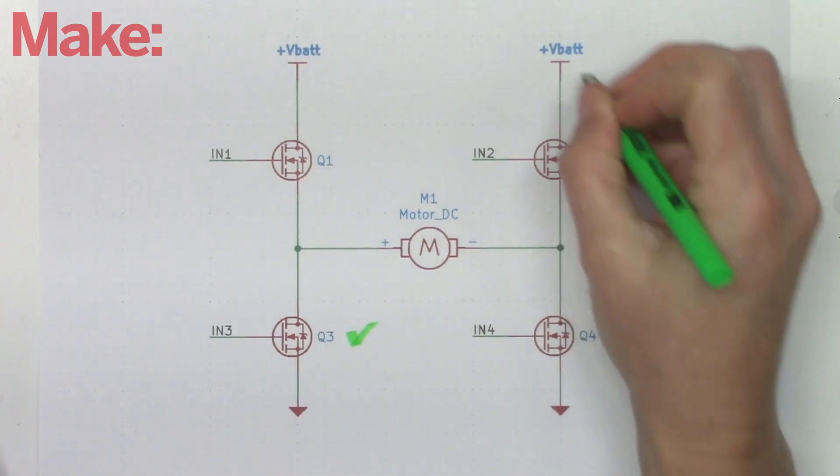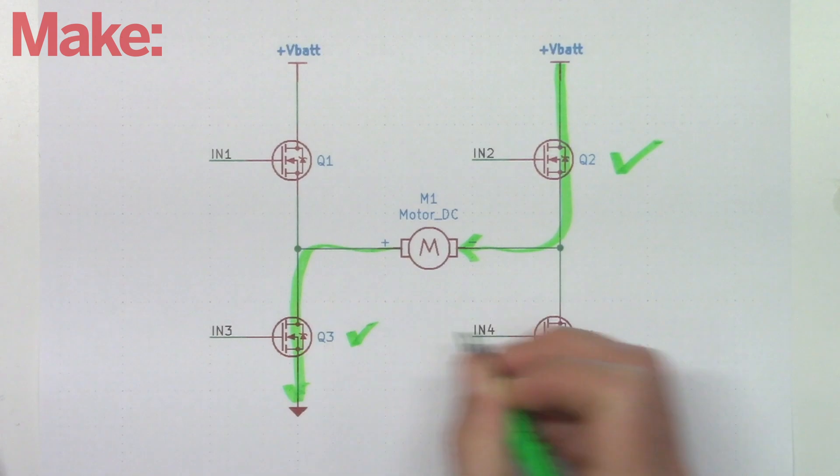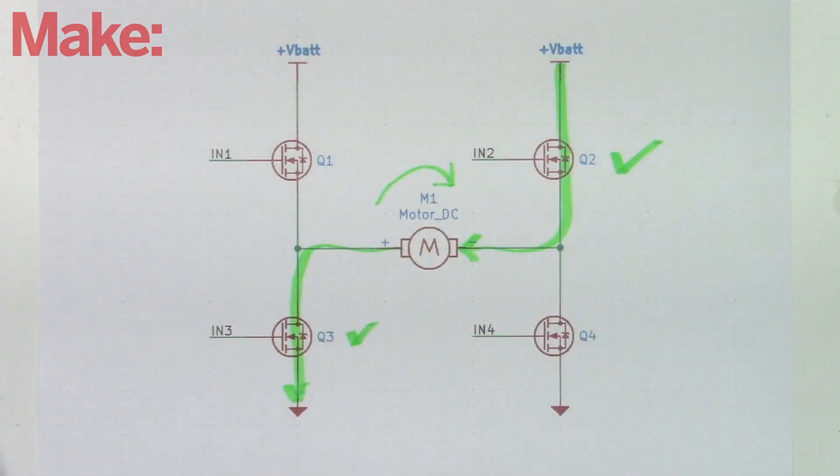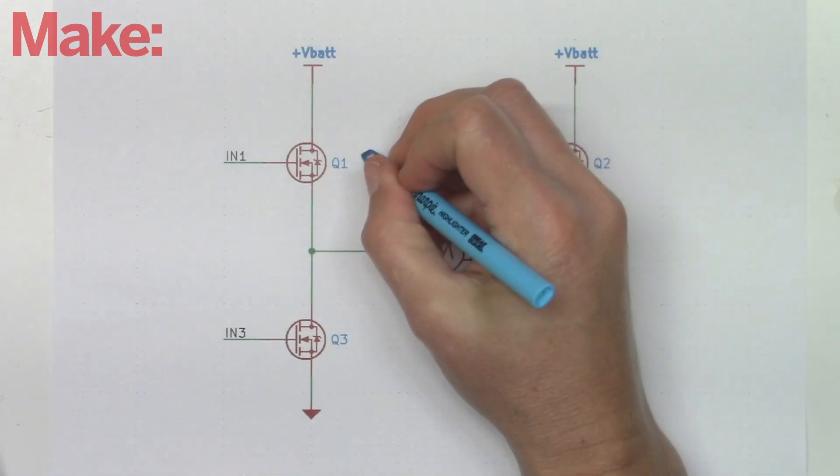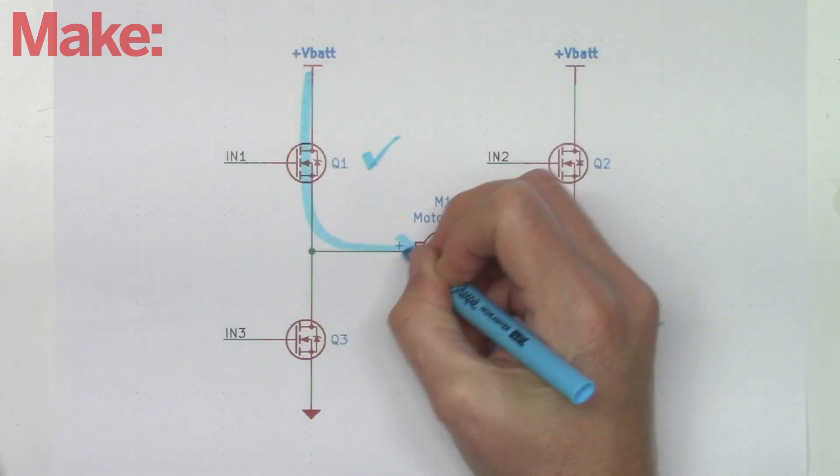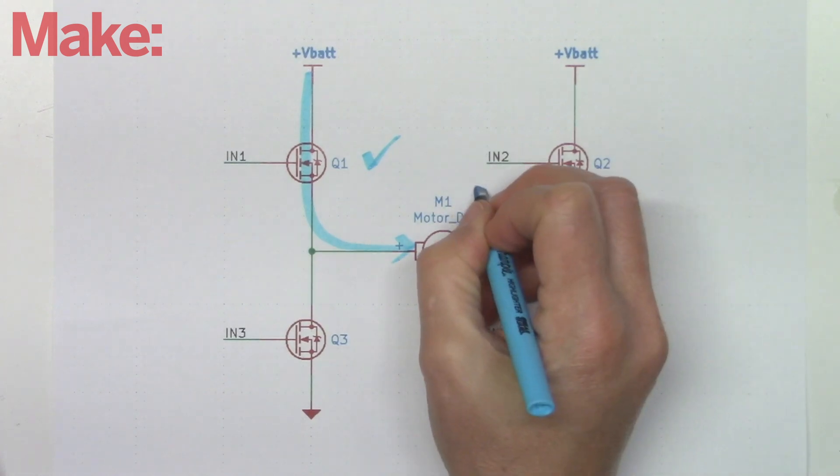When the upper right transistor is on, and the lower left transistor is on, and the other transistors are all off, current flows through the motor in one direction, which makes it spin in one direction, let's say clockwise. When the upper left transistor and lower right transistors are on, and the others are all off, current flows through the motor in the opposite direction, making it spin counterclockwise.